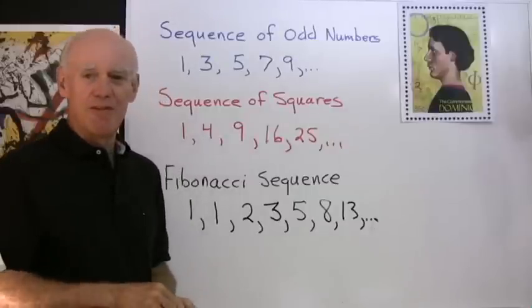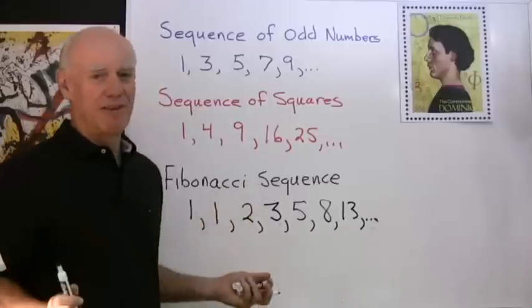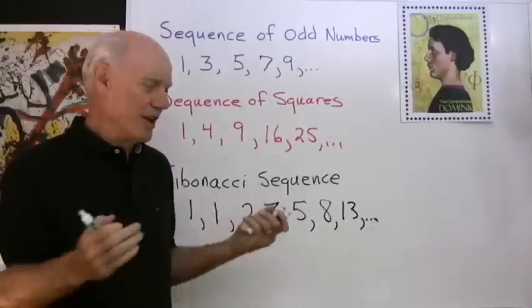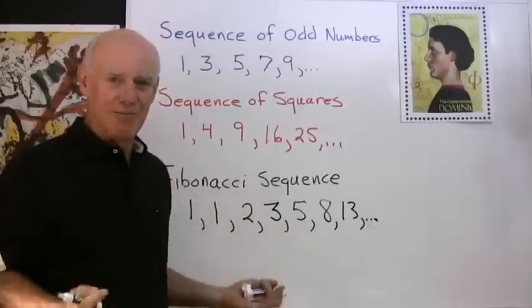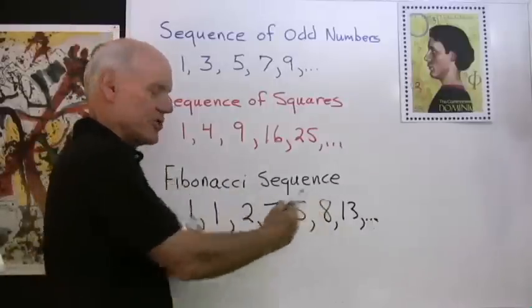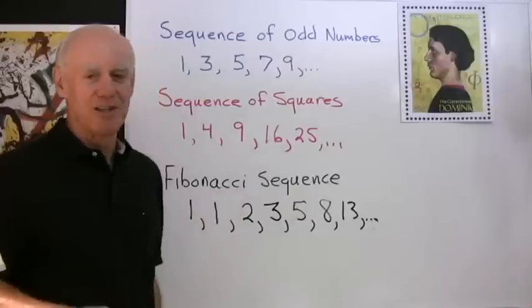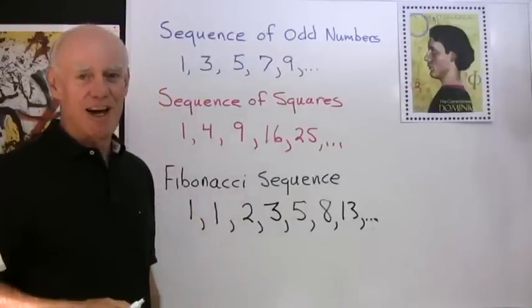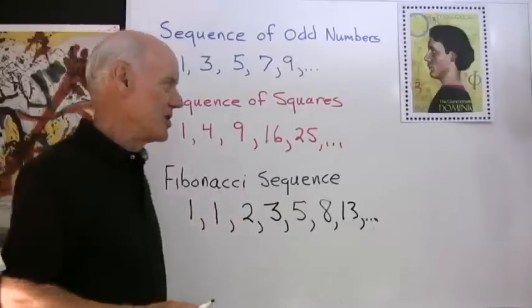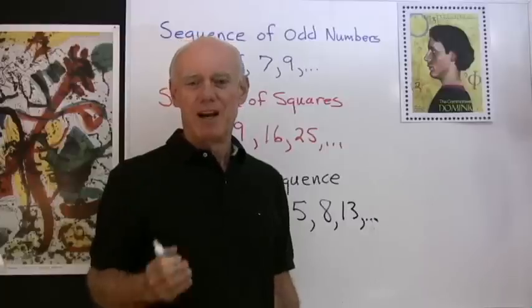It turns out that the Fibonacci sequence has all kinds of applications around the world that we live in. Things just sort of align themselves according to the Fibonacci sequence. You wouldn't think so when you first see it, but it's all over the place. I want to show you my favorite application of the Fibonacci sequence: the family tree of a male honeybee.